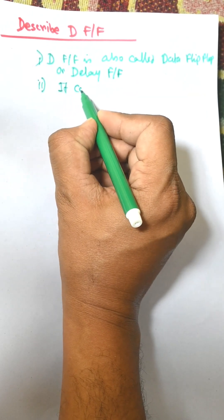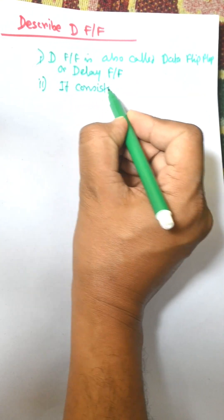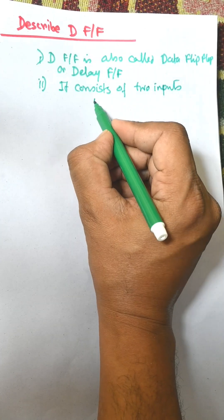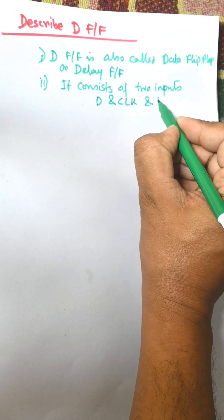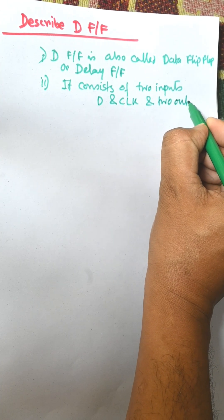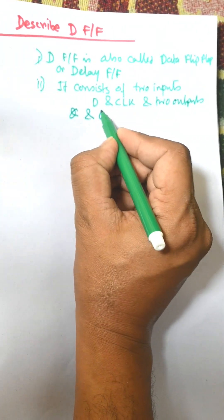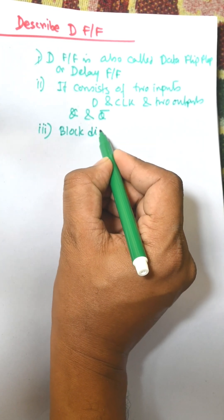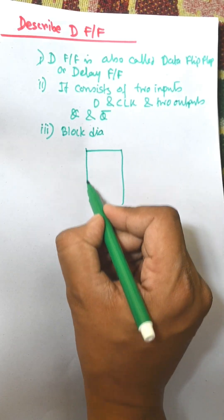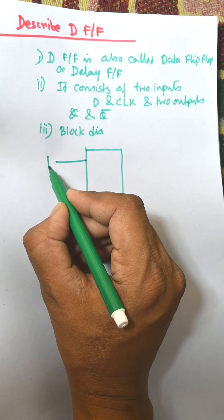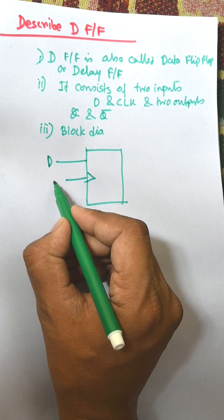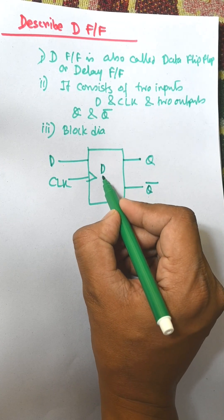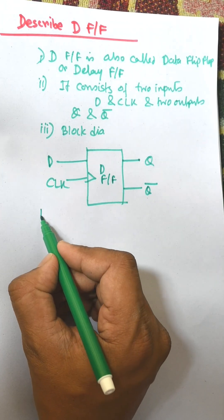The D-type flip-flop has two outputs: Q and Q-bar. This is the block diagram of the D flip-flop. It consists of a D input, a CLK input, and two outputs Q and Q-bar.